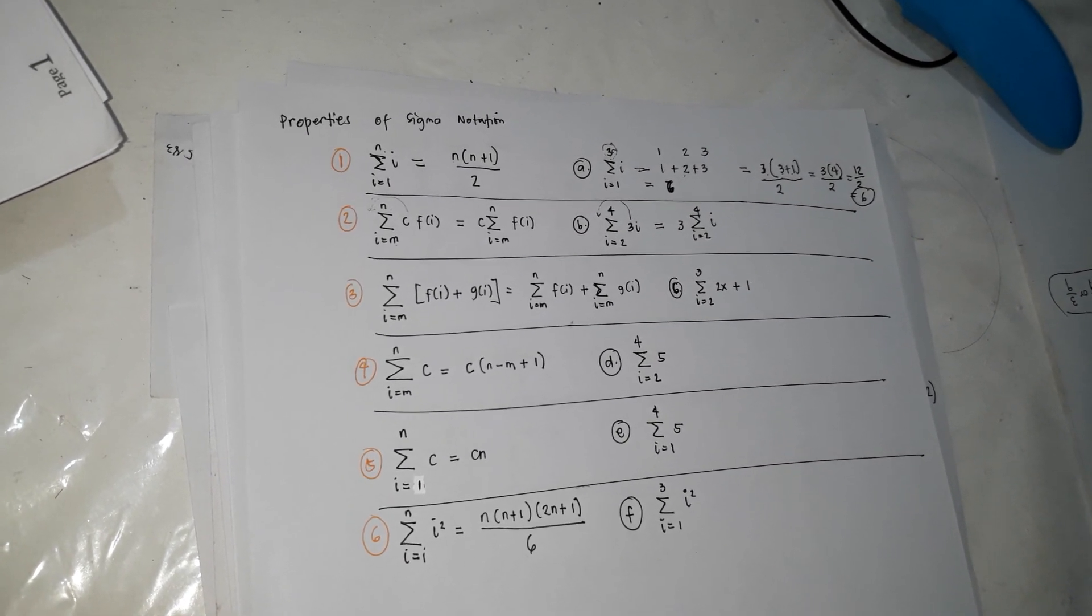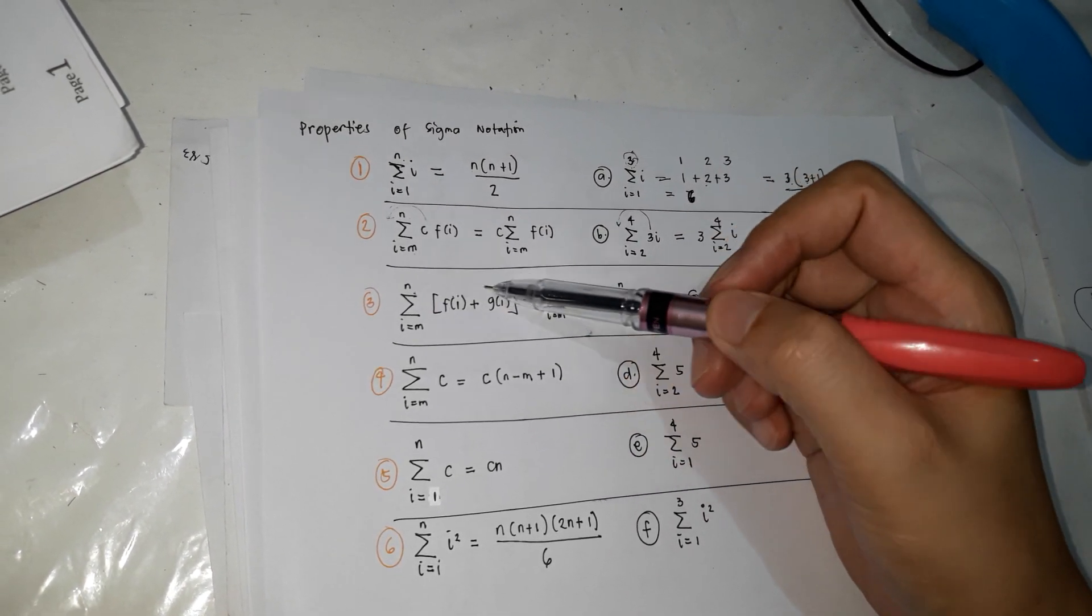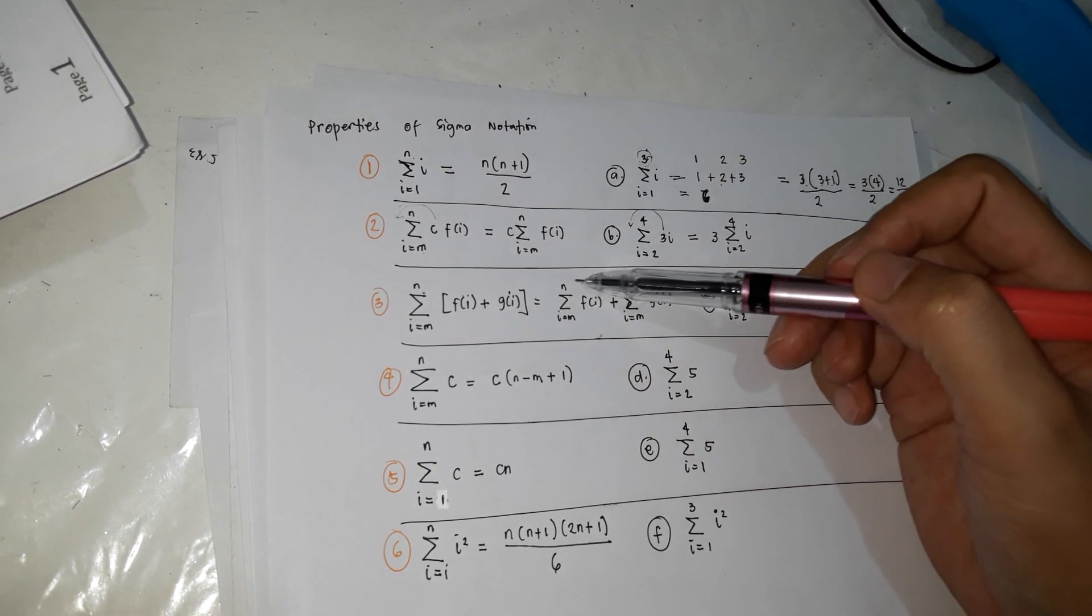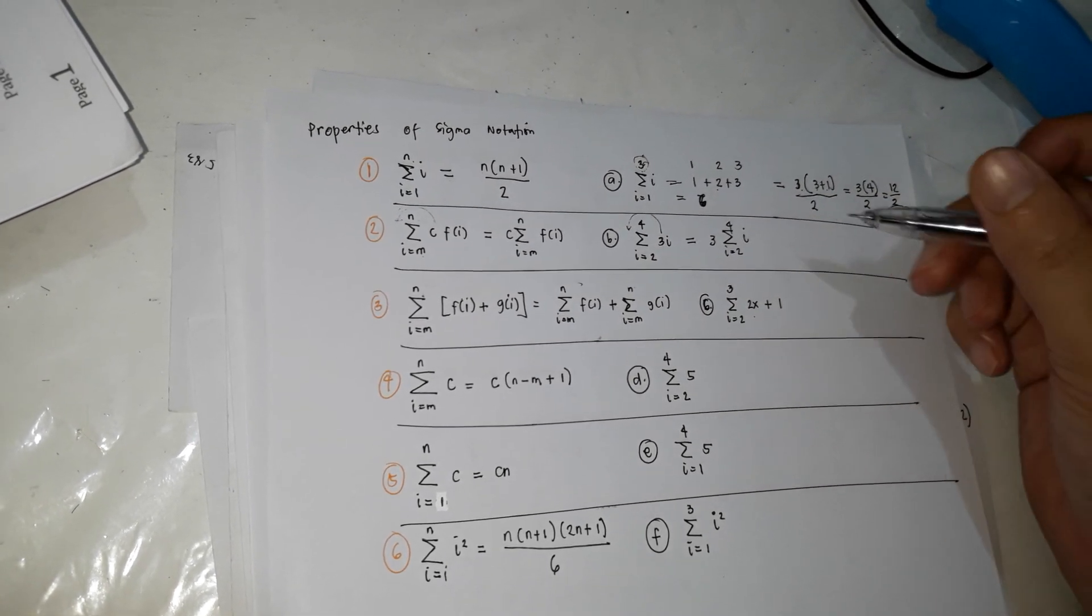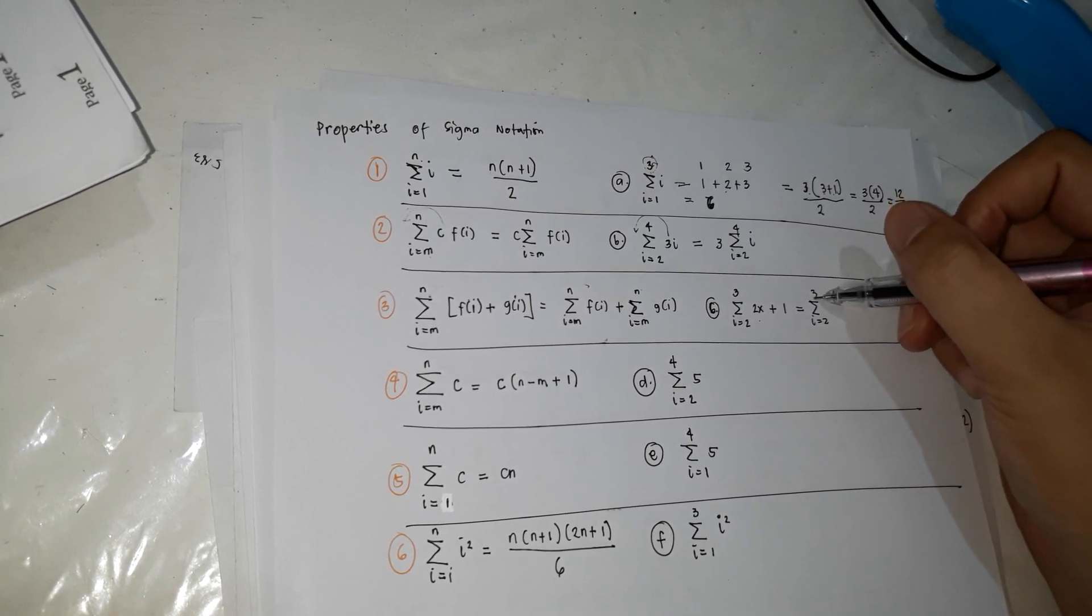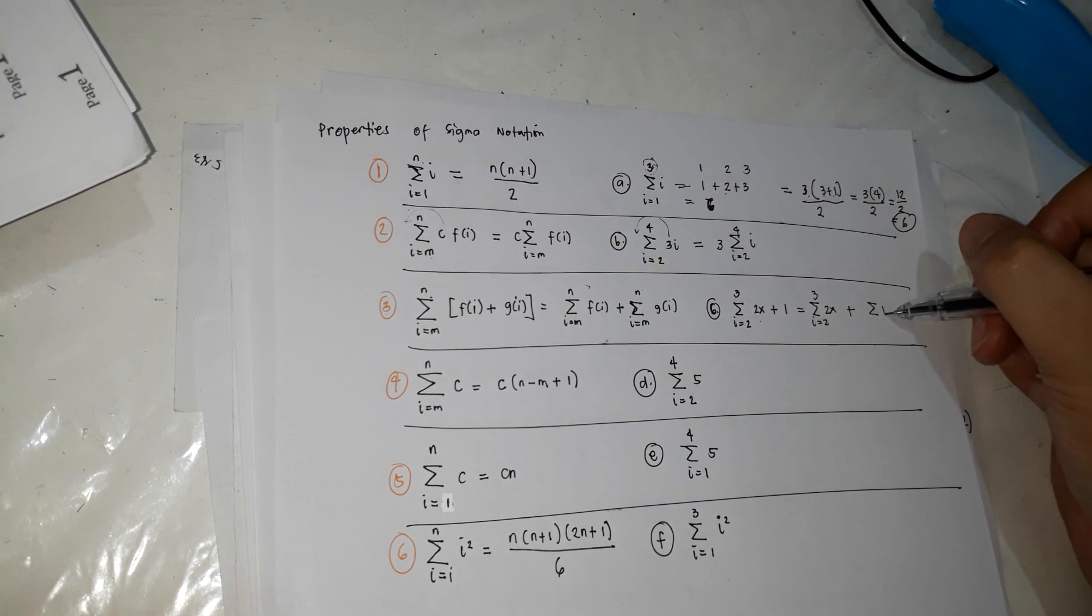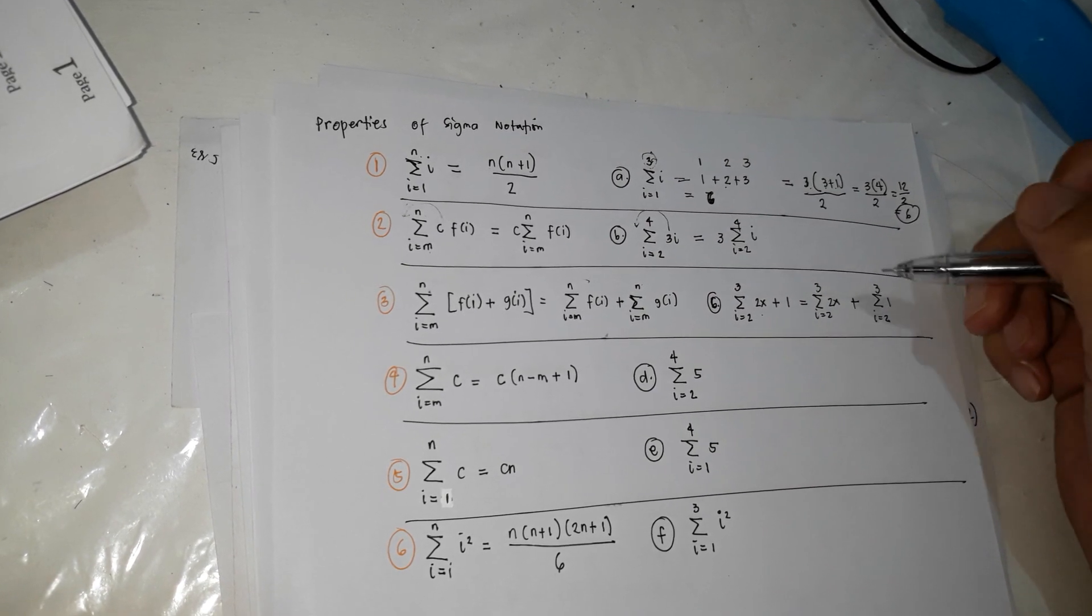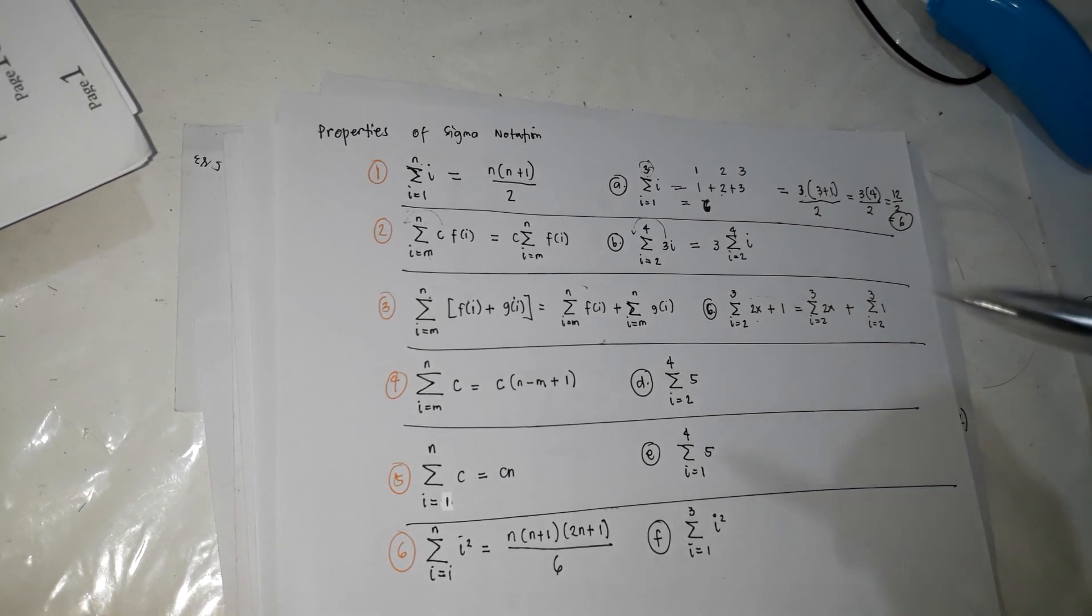So next is, parang distributed property na i-distribute mo ang summation dito, i-distribute mo rin ang summation dito. So i-distribute mo sya na ganito, plus summation of G of I. So kapag ganito, example, it's the same as summation of I is equal to 2, 3, 2x, plus summation of I from 2, equal to 2, 3. So i-distribute mo lang yung summation.